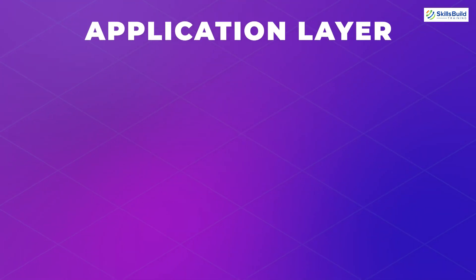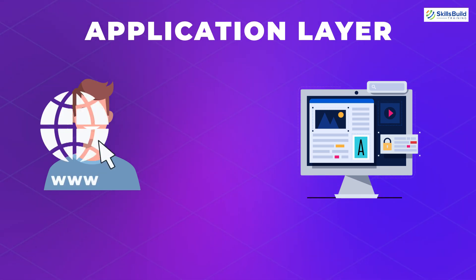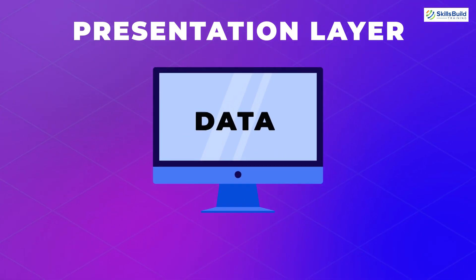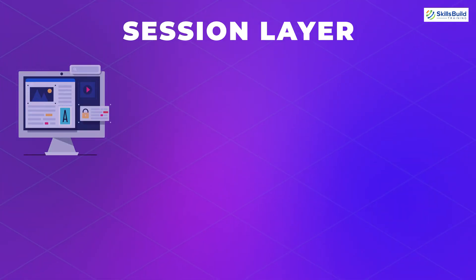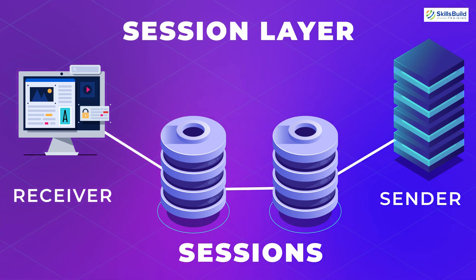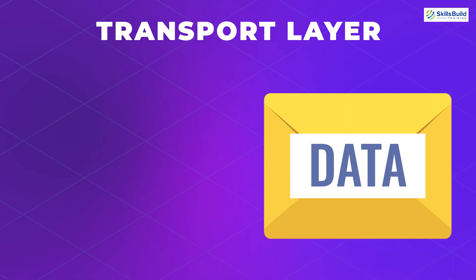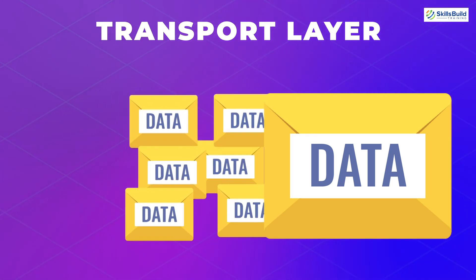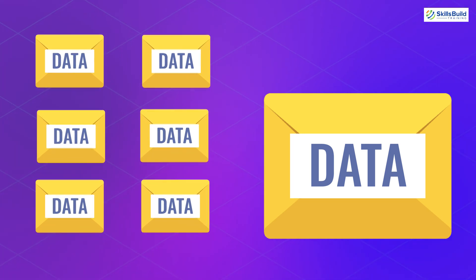Let's have a brief explanation of each layer. At the application layer, the interaction between the human and the system takes place, and applications access the network. The presentation layer ensures that the data is in the right form and format — this is where data encryption takes place. The session layer is responsible for maintaining the connection between devices and controlling ports and sessions. The transport layer works on data received from the session layer and breaks it into segments, meaning small parts.